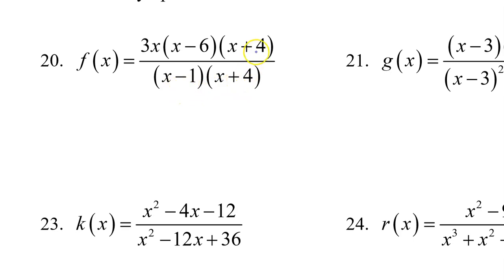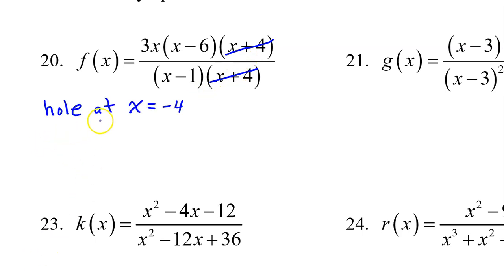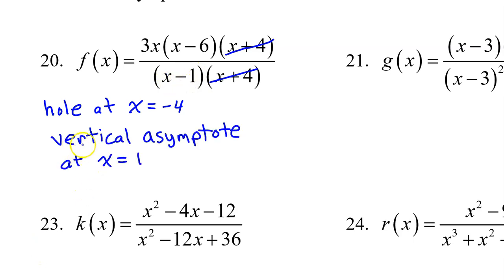For example, the x plus 4 cancels out, so that means a hole — a hole at x equals negative 4. The x minus 1 in the denominator does not get cancelled out, so that gives you a vertical asymptote at x equals 1.